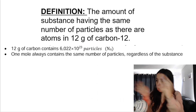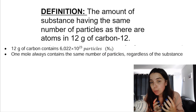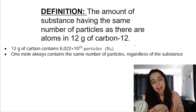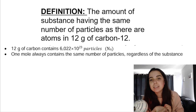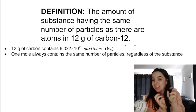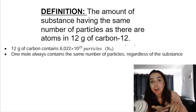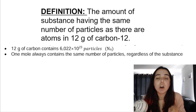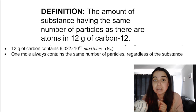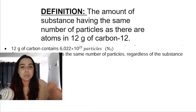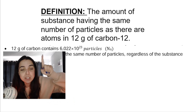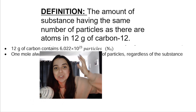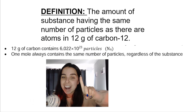So you take carbon-12, which is a specific isotope of carbon, and you measure out 12 grams. If you were to count out all of the atoms in those 12 grams of carbon-12, you would get 6.022 times 10 to the 23 atoms. That's why 12 grams of carbon-12 contains 6.022 times 10 to the 23 particles or atoms — that is one mole.